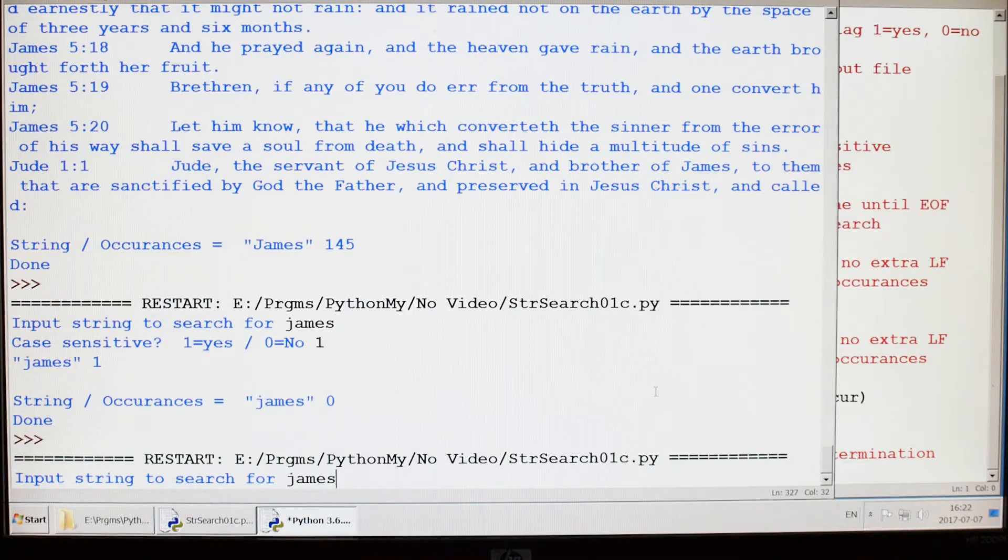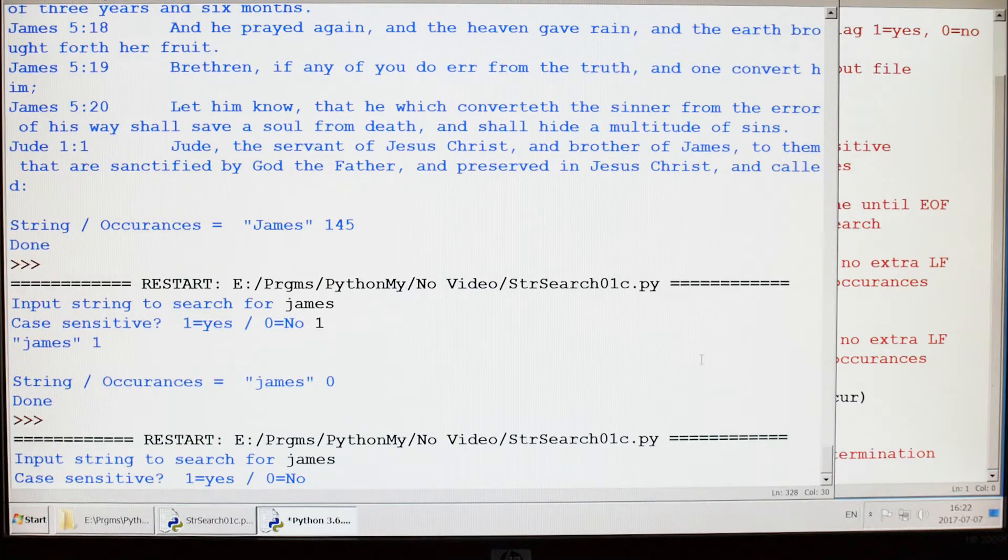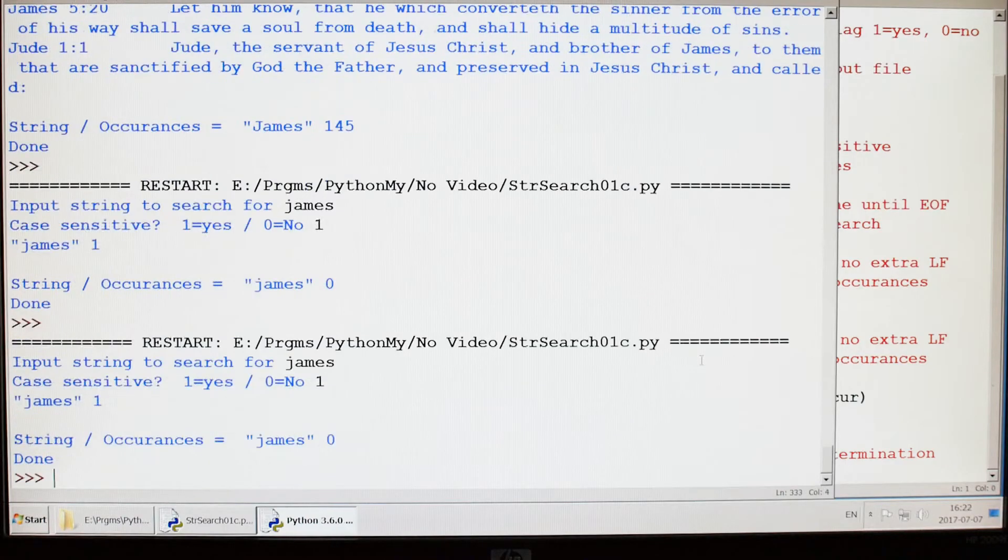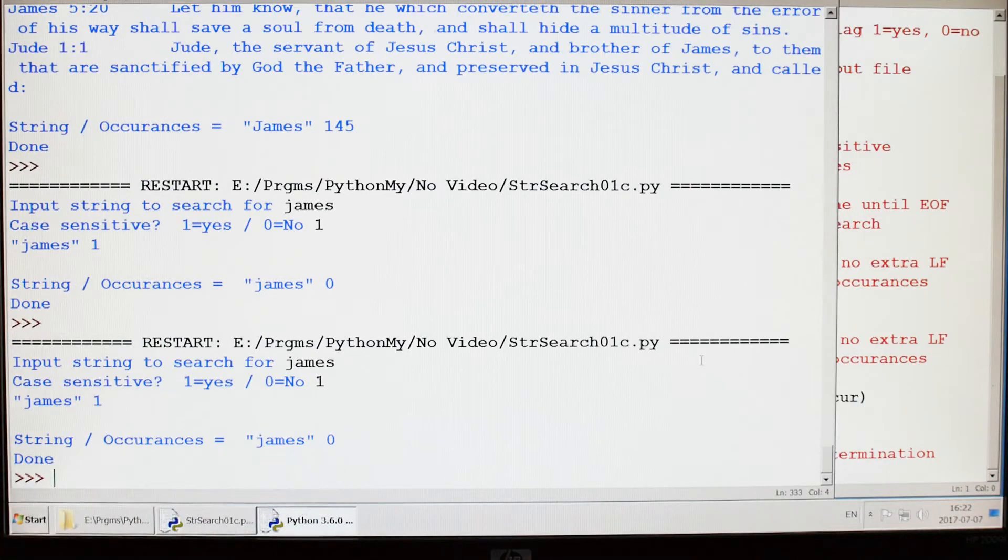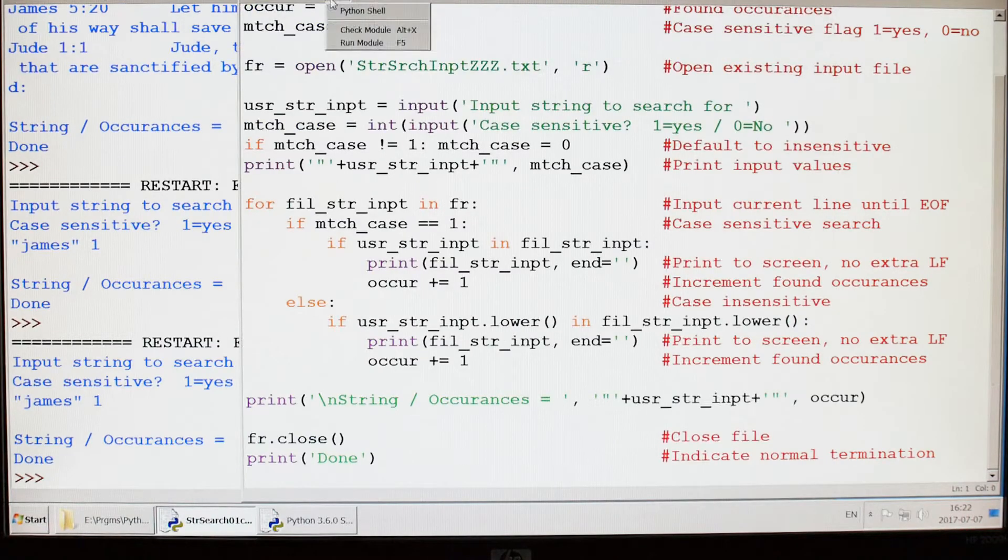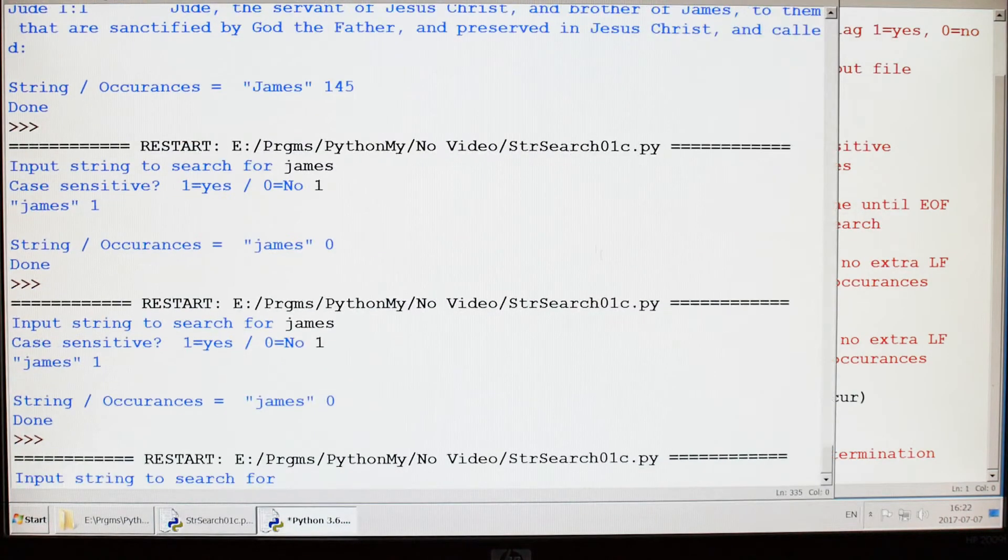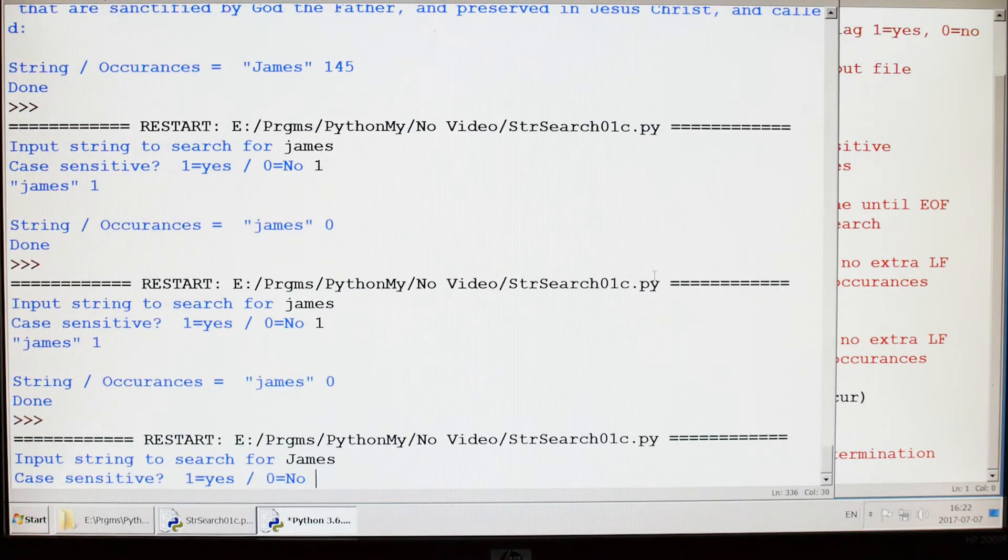Case sensitive, if we say yes then we're going to find out that the number of occurrences of 'james' with a little j is zero. Okay, so that works. Now let's go back and try it with a capital J: shift J-A-M-E-S, enter, zero for no.